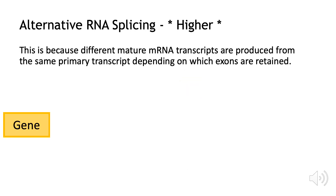The genetic code is firstly copied into the primary RNA transcript through a process called transcription. Alternative RNA splicing removes non-coding introns and splices different combinations of exons together to create different mature mRNAs, depending on which exons are retained.